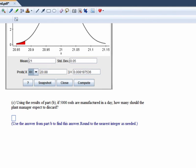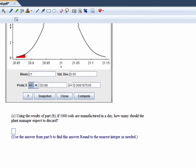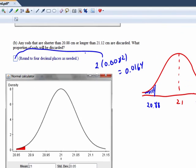Okay, success is finding a rod that we're going to discard, meaning finding a rod whose length is shorter than 20.88 centimeters or longer than 21.12 centimeters. Now the probability of finding a rod that gets discarded is 0.0164.